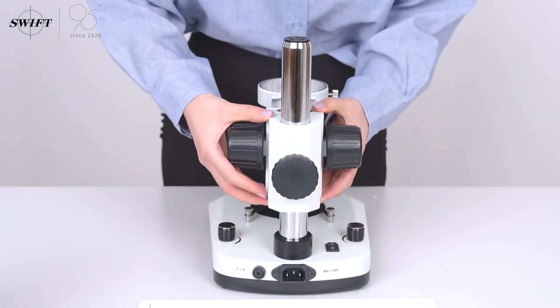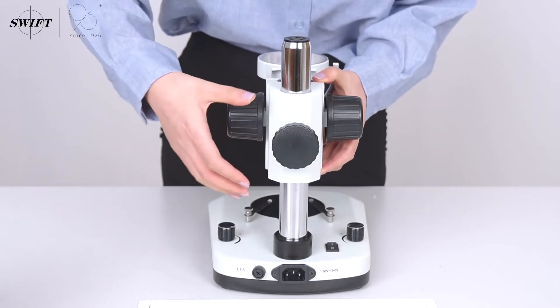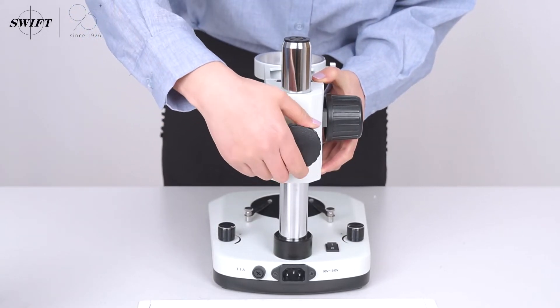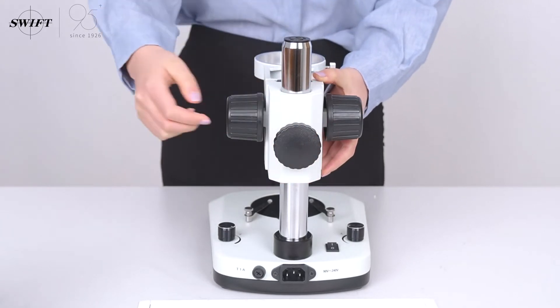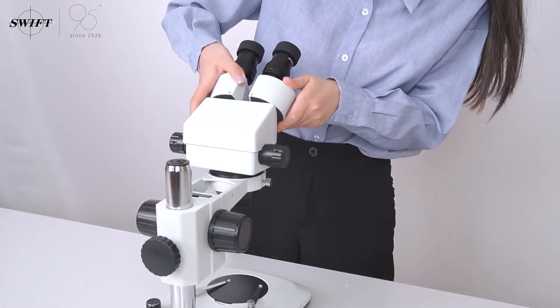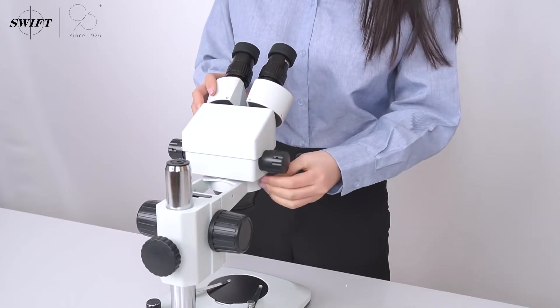Let's adjust the mirror body bracket to the appropriate height to quickly find the image by focusing. Tighten the finger tight handle to prevent the body from slipping off. Put the lens body into the bracket and tighten the screws.